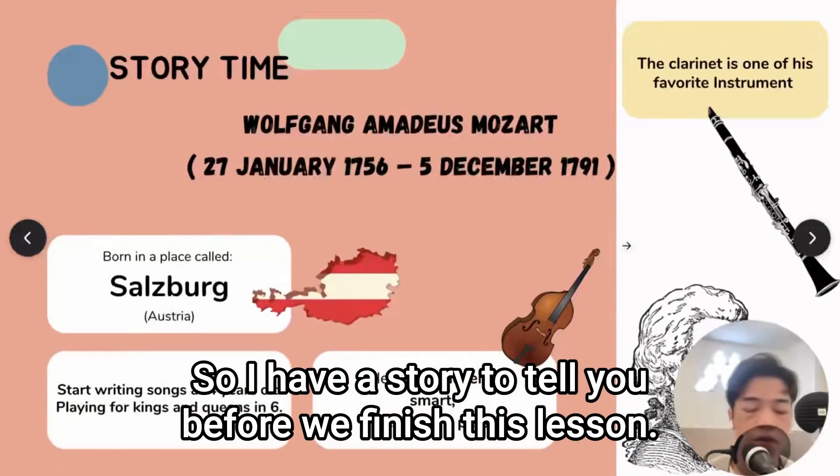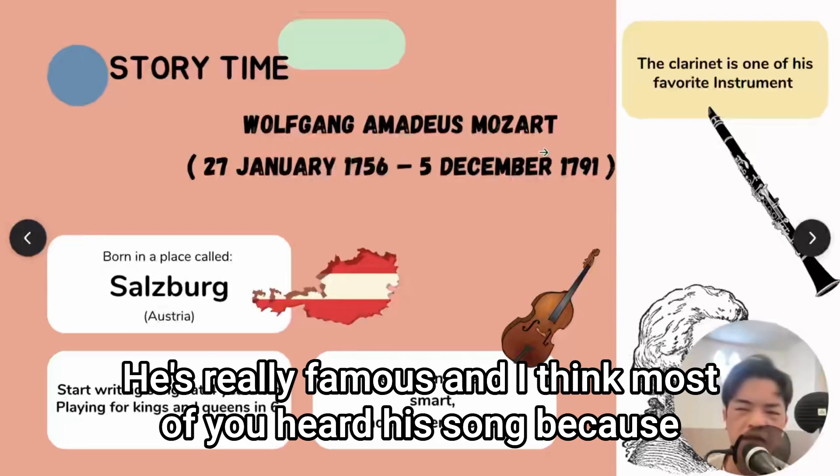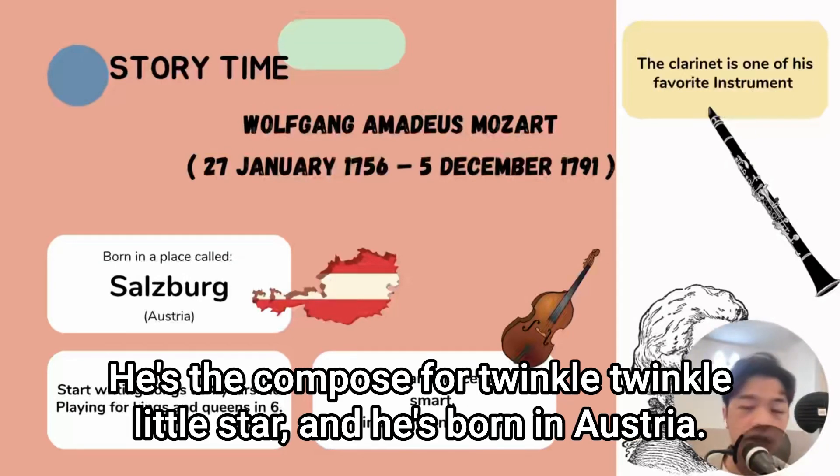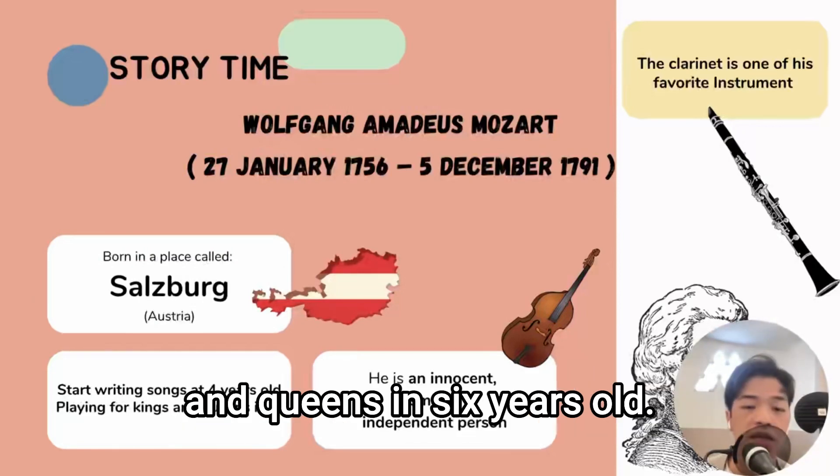So I have a story to tell you before we finish this lesson. I'm going to introduce a composer called Mozart to you. He is really famous, and I think most of you heard his song because he has Twinkle Twinkle Little Star. I think everyone has heard it before. He is the composer for Twinkle Twinkle Little Star, and he is born in Austria. He starts writing songs at four years old and playing for kings and queens at six years old.